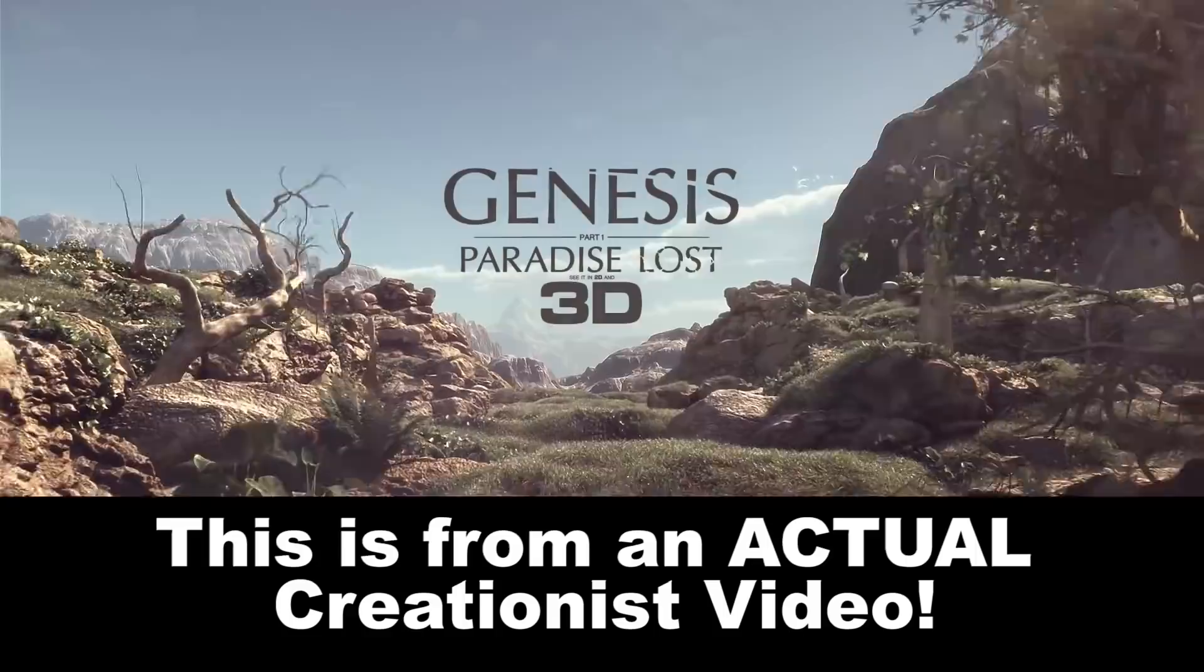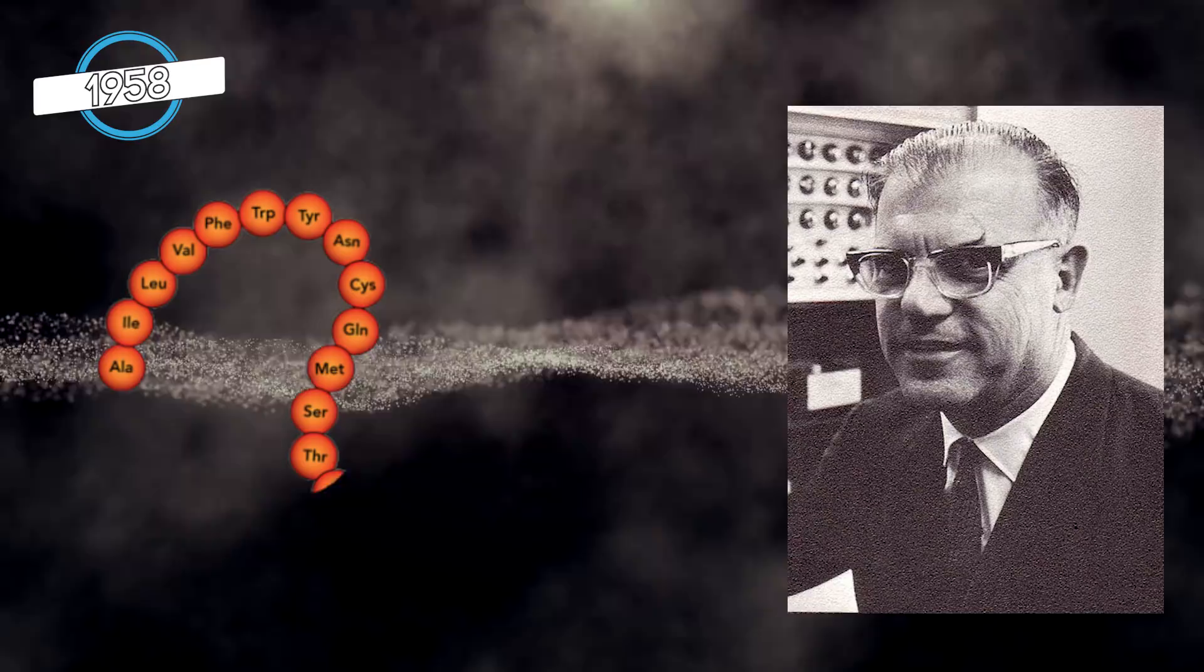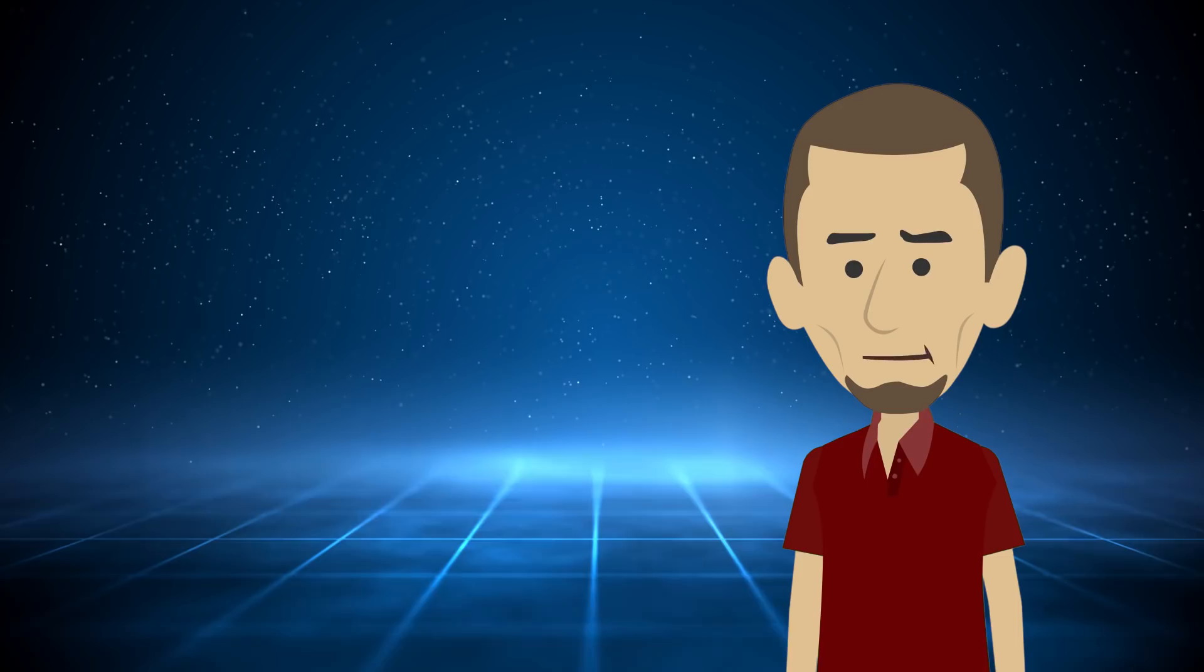In 1958, Sidney Fox discovered how a mixture of amino acids can spontaneously form into polypeptide chains as the mixture dried. He called these protein precursors proteinoids. It's not even meaningful information as far as DNA is concerned. No, that's because DNA and RNA are made of nucleotides, not amino acids.